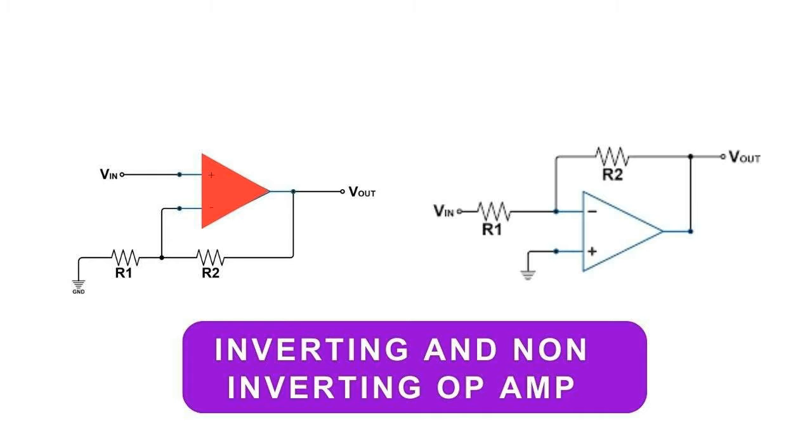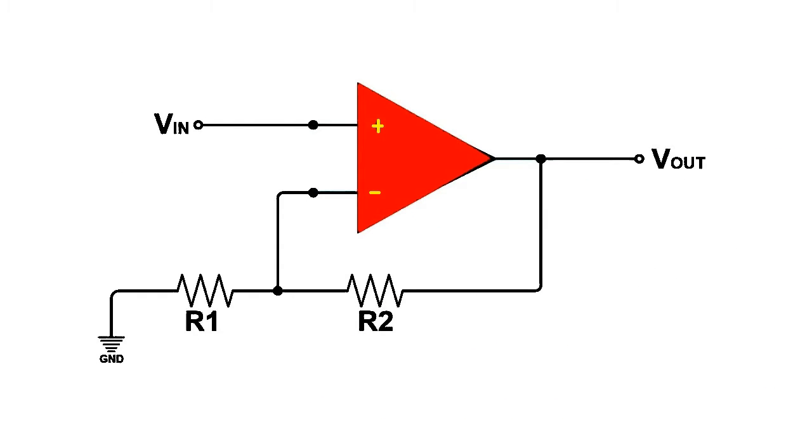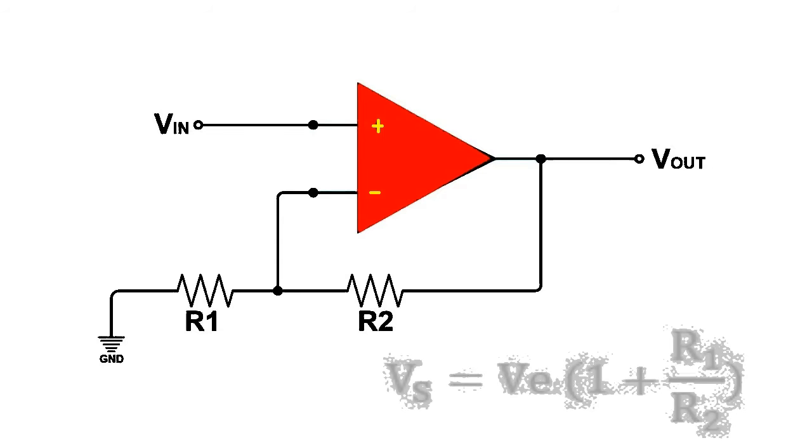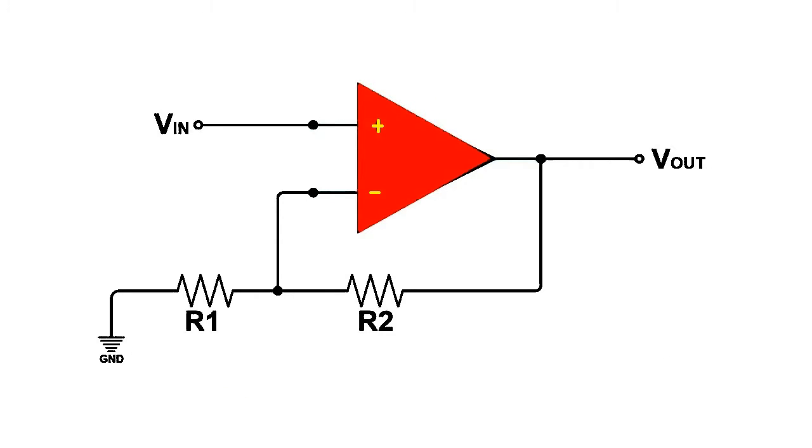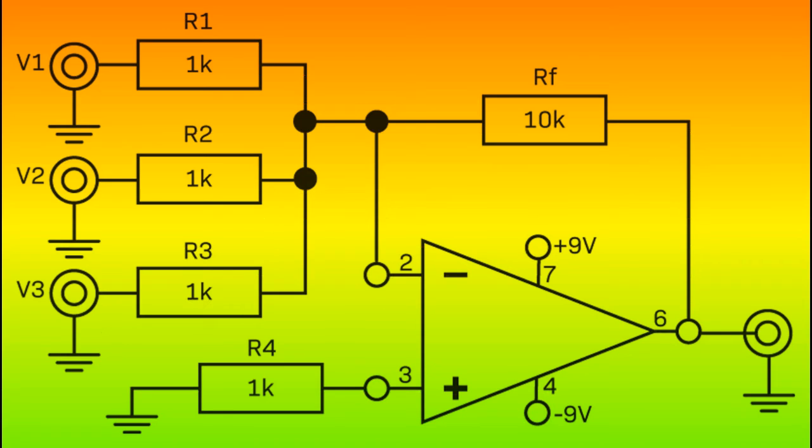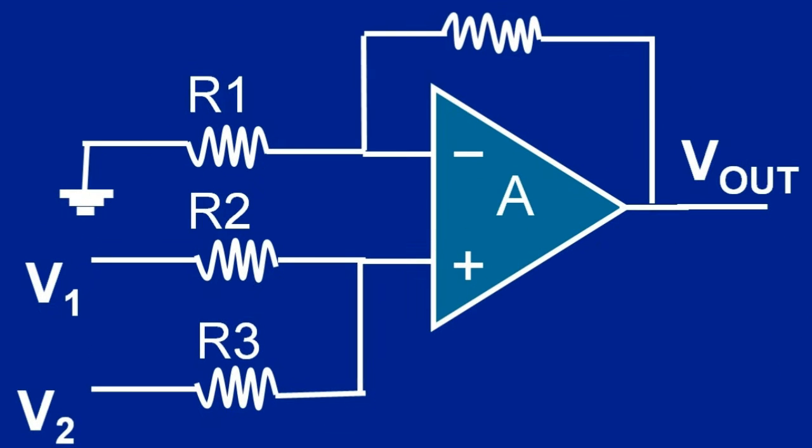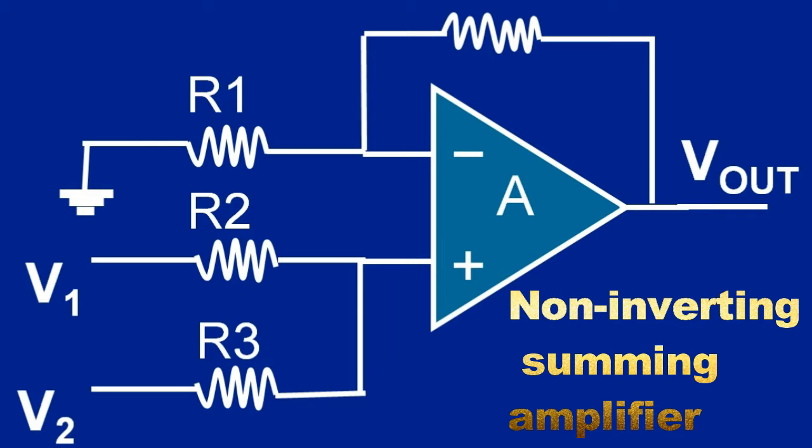This configuration is very similar to the inverting operational amplifier. For the non-inverting one, the input voltage is directly applied to the non-inverting pin and the end of the feedback loop is connected to ground. These configurations allow amplification of one signal. It's possible to amplify several signals by using summing amplifiers.